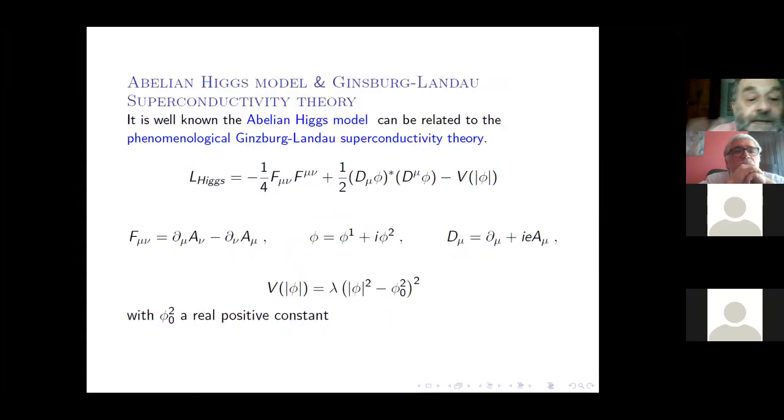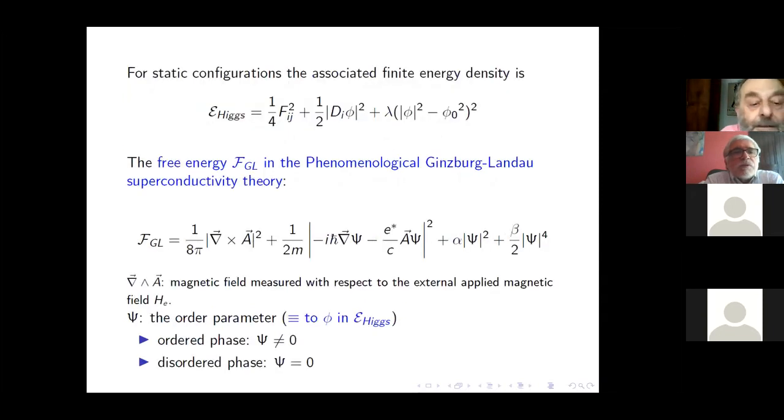It is well known that the Abelian-Higgs model can be related to the phenomenological Ginzburg-Landau superconductivity theory. So the Abelian-Higgs Lagrangian that everybody knows is the one that is there with a symmetry breaking potential for the complex scalar and a U(1) gauge field. If you look for static configuration, the associated finite energy density associated to this Lagrangian is the one in this formula.